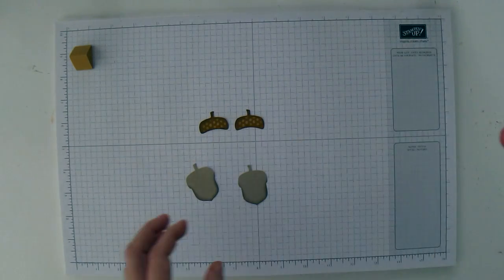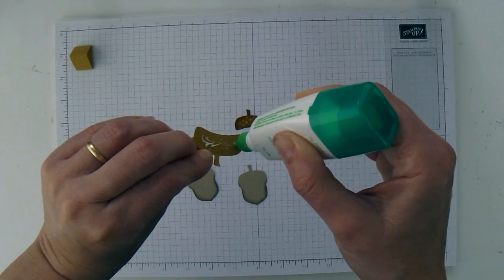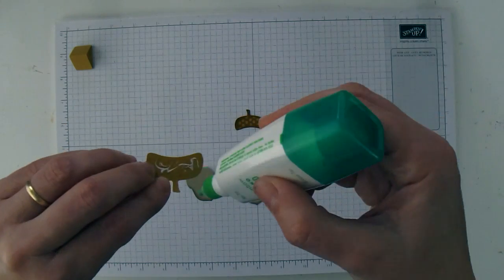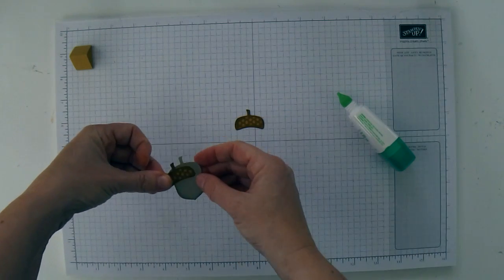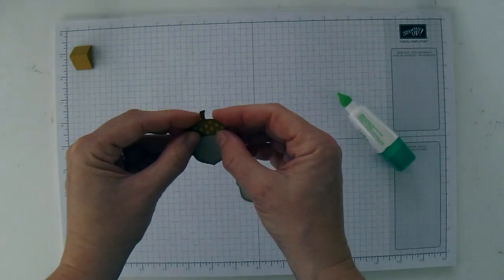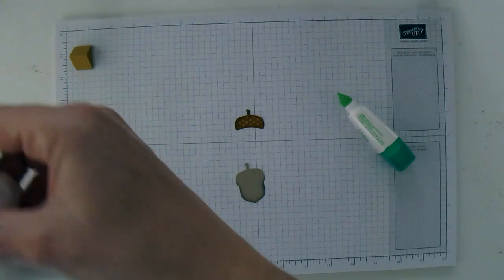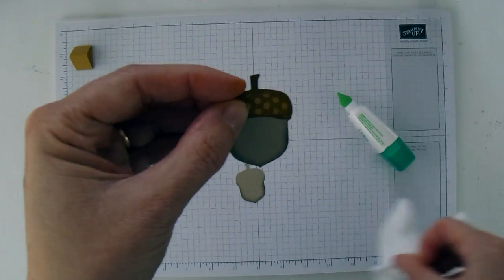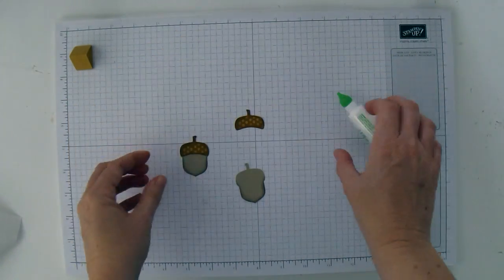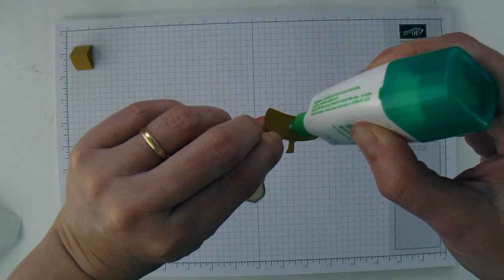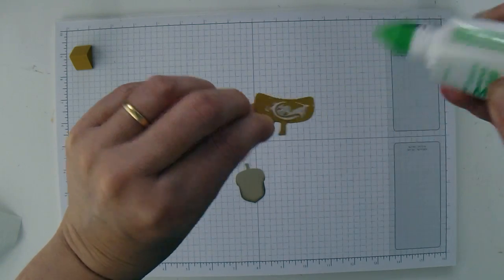And then you're just going to need some Tombow and put it on each of the caps. Make sure, I'm going to put a little bit on the stem too, make sure you line them up with the right side. Because that little stem, tissue to get rid of the excess glue, that stem does curve. So you want to make sure that you're matching the correct cap up with the correct base.